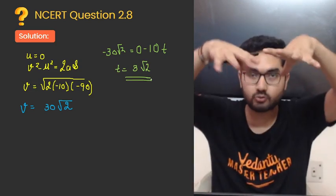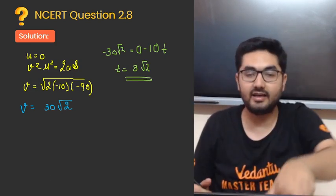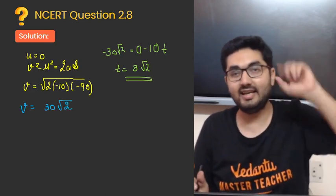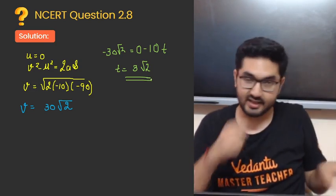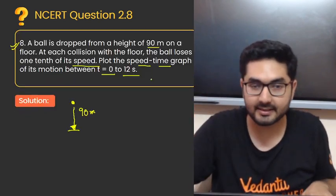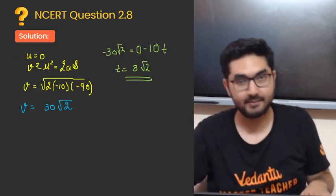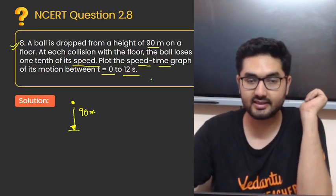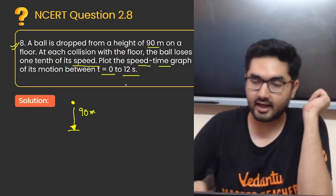Matlab pehla jab usko drop kiya, to usko 3 root 2 time laga aur woh 30 root 2 uski final velocity thi. Jab drop kiya to initial velocity kitna hai, u equals to zero. Ab agla situation kya hai? Ab ek baar agla situation dekhlo.